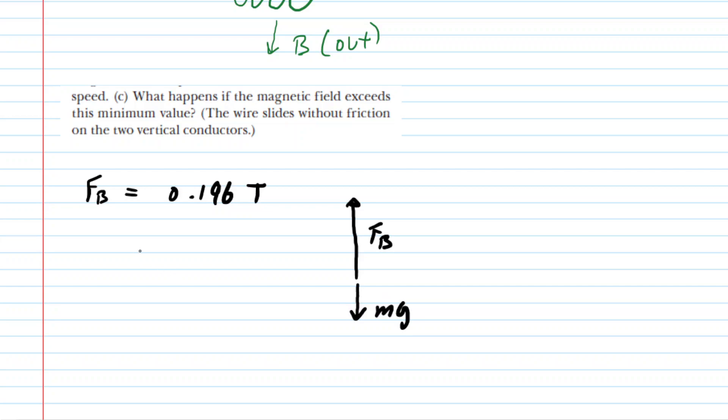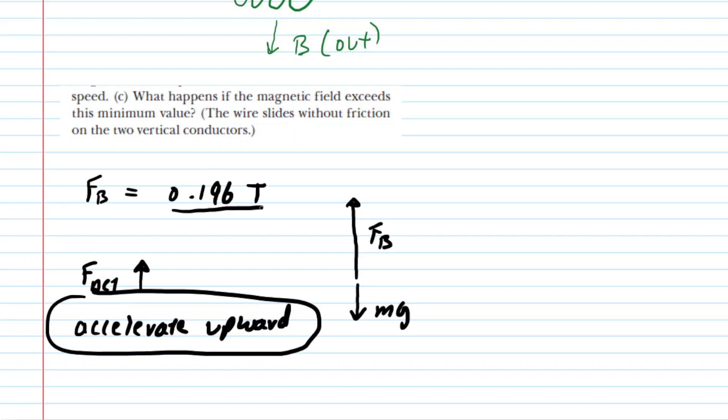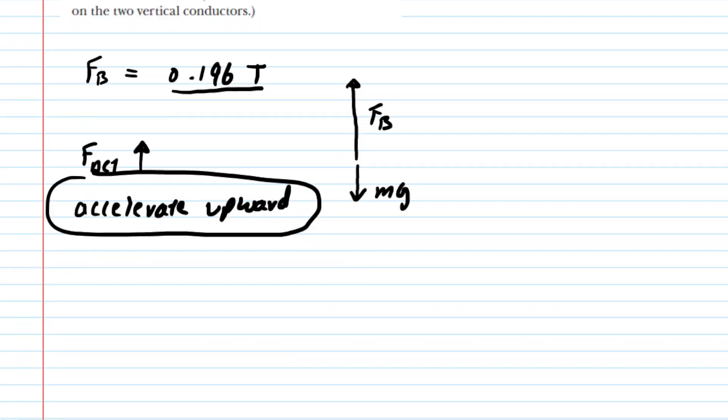We'll exaggerate it here a little bit. Now of course if that were true there would be a net force acting upward on that conductor. And if there's a net force acting upward on the conductor then the conductor is going to accelerate upward. So the correct answer to part C is that the conductor would accelerate upward if the magnetic field exceeded the 0.196 tesla. And just a note that the symbol here for magnetic field should have been B not F sub B. So small correction there but indeed the conductor would accelerate upward.